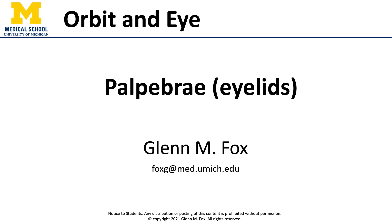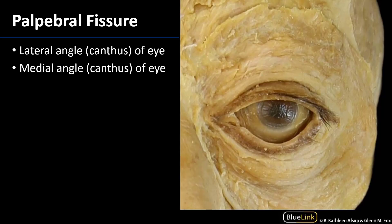Let's talk about the palpebrae, or the eyelids. The palpebrae surround the palpebral fissure, which is the open space through which the eyes are exposed. There is a superior palpebra and an inferior palpebra, and where they meet at the edges are the canthi, or the angles. There is a medial angle or canthus of the eye — the direction toward which tears drain — and a lateral angle or canthus of the eye.